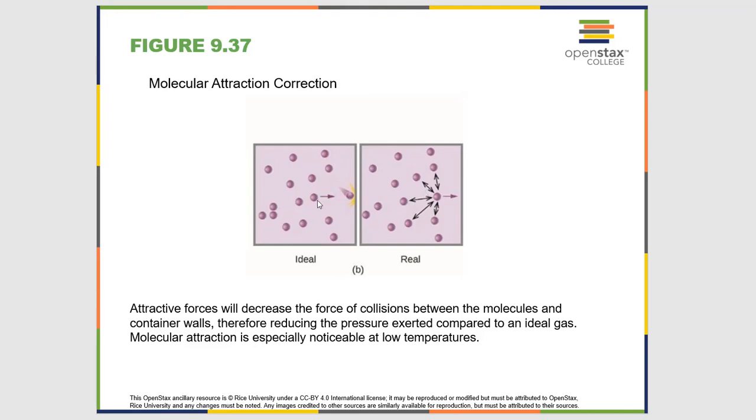If this molecule is flying in this direction, it's not going to hit the wall of the container with quite as much energy because it's attracted to these other molecules. Which means that the pressure exerted will be lower than predicted by the ideal gas law. Because the ideal gas law assumes elastic collisions and this will hit the wall of the container with all of the force. But due to these attractive forces, that's simply not the case.